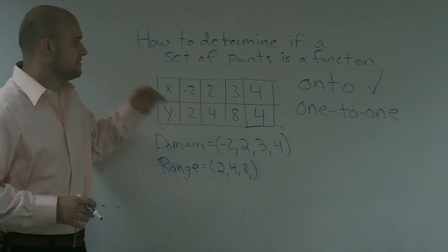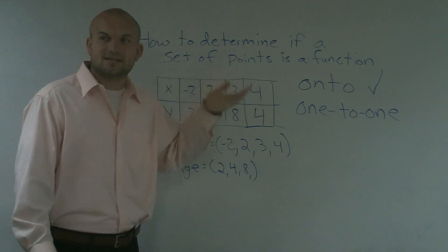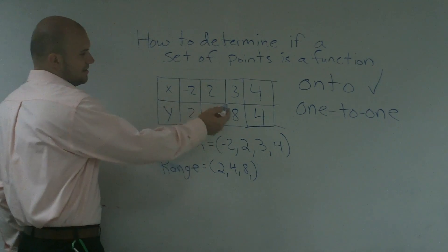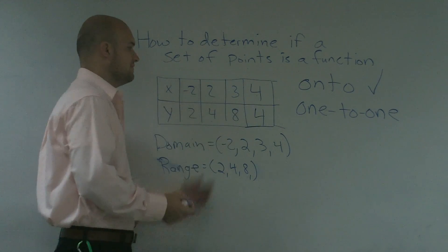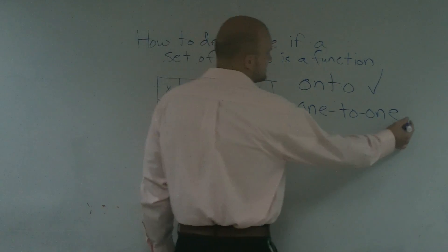For one-to-one, everything in the domain has to uniquely go to something in the range. What we'll notice is we have a 4 appearing twice here. We say 2 goes to 4 and 4 goes to 4. Therefore, 4 in our range is not uniquely mapped, so this is not one-to-one.